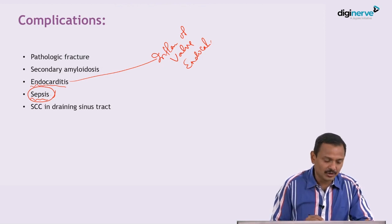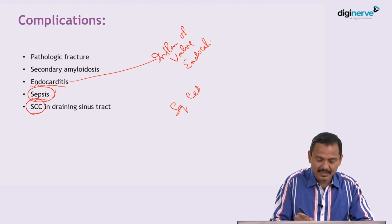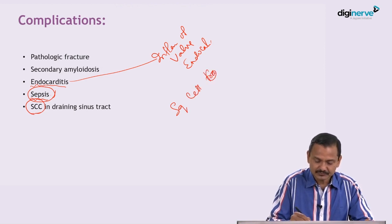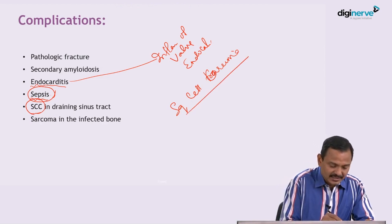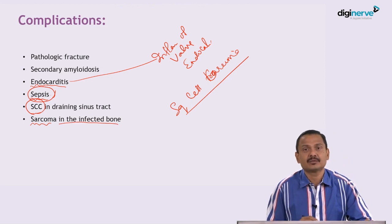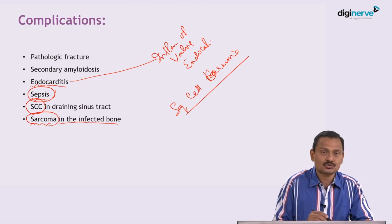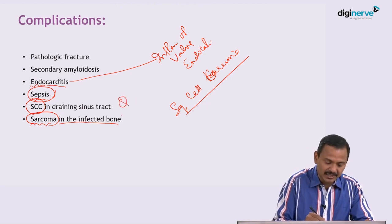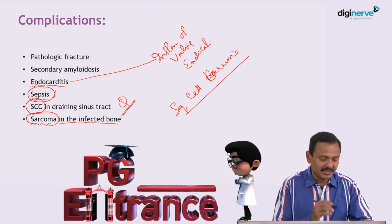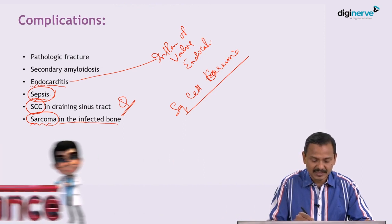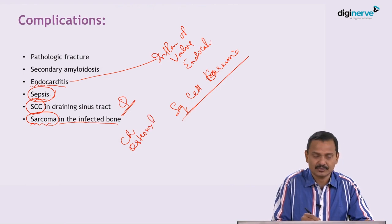The most important complication from the sinus tract is squamous cell carcinoma. Squamous cell carcinoma comes from the sinus tract, whereas sarcoma develops in the infected bone. The bone will develop sarcoma; the sinus tract will develop squamous cell carcinoma. This may come as an objective or MCQ — you have to remember this. These are the two malignancies, SCC and sarcoma, that develop in relation to chronic osteomyelitis.